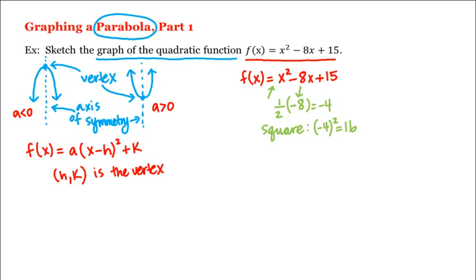And then we add and subtract this number. That is, this is equal to x² - 8x + 16 - 16 and then we still have the +15. Now these first three terms will form a perfect square, namely (x - 4)² and then -16 + 15 is -1.